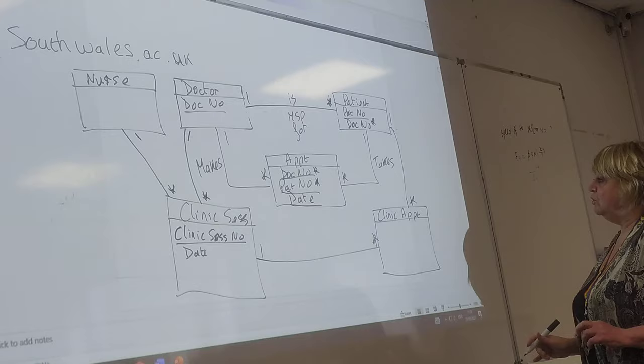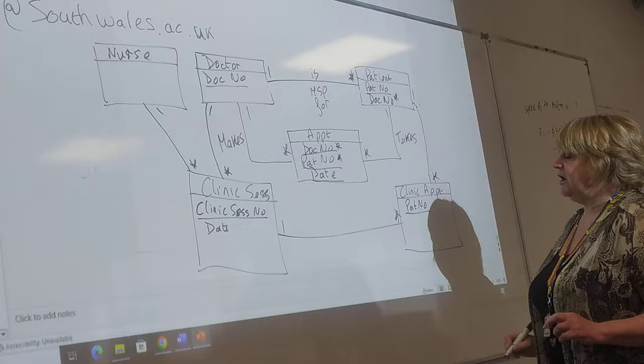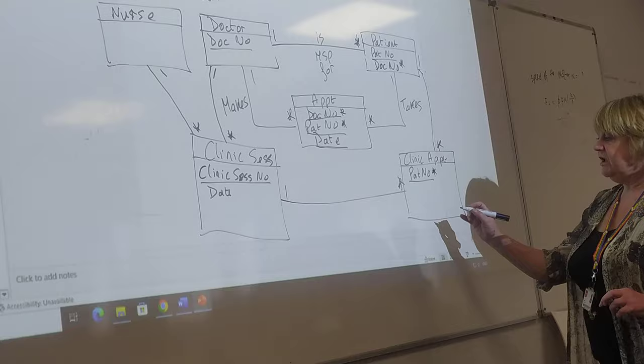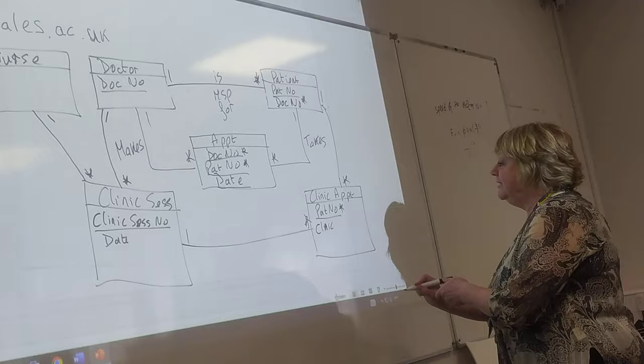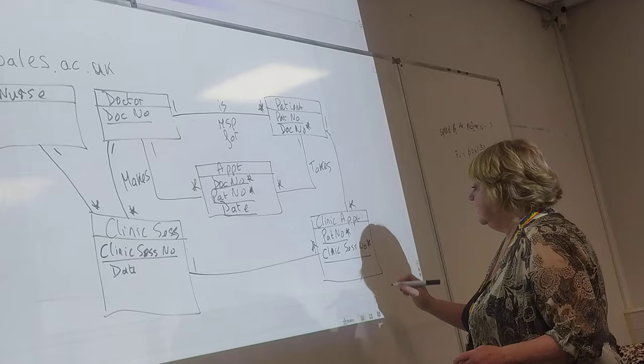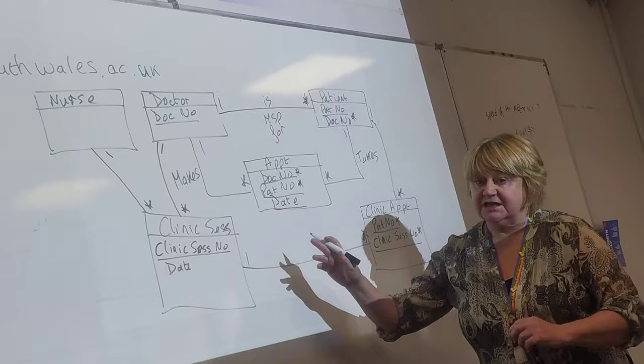So we have patient number as part of the primary key, and clinic session as a foreign key. Clinic session number is also the foreign key and forms part of the primary key of the link entity.